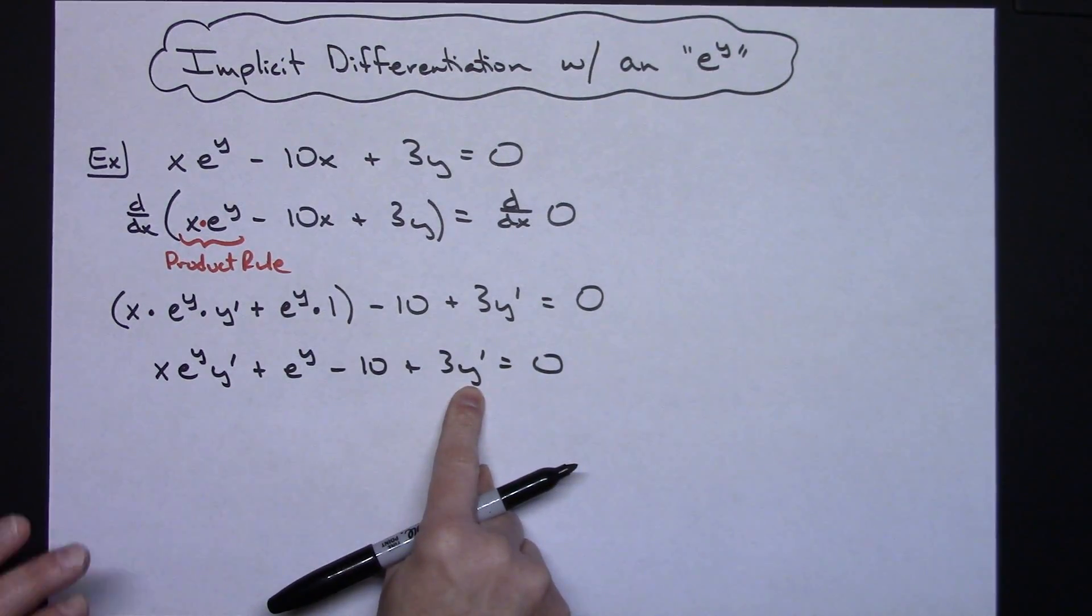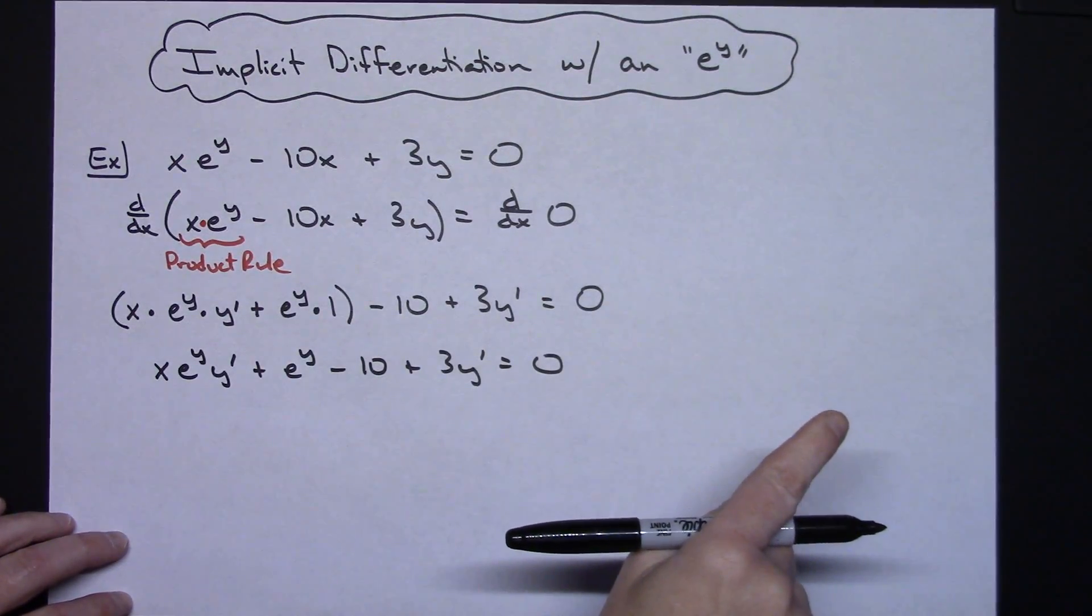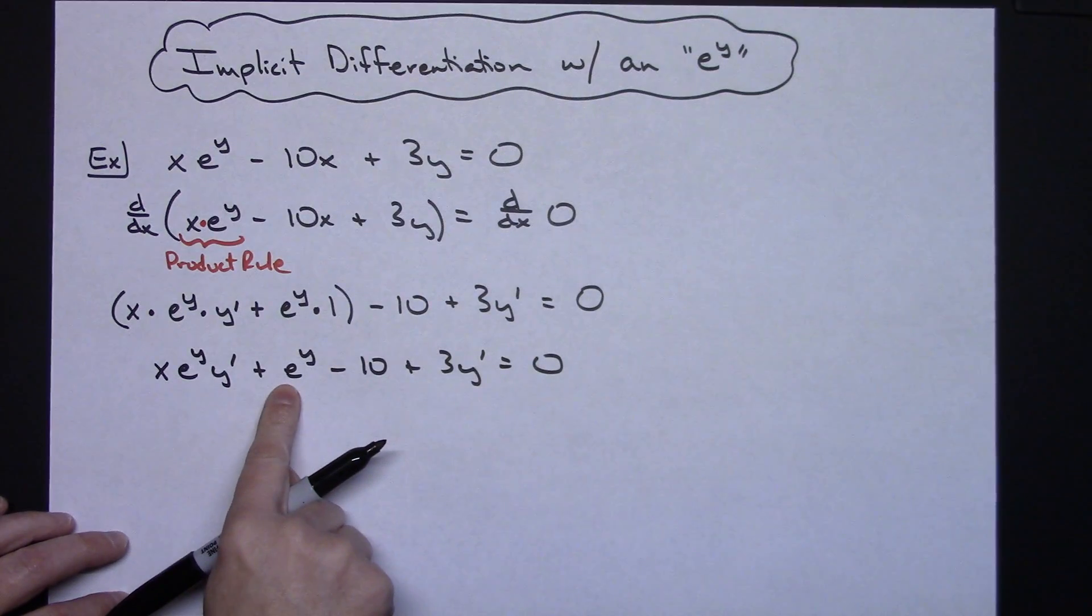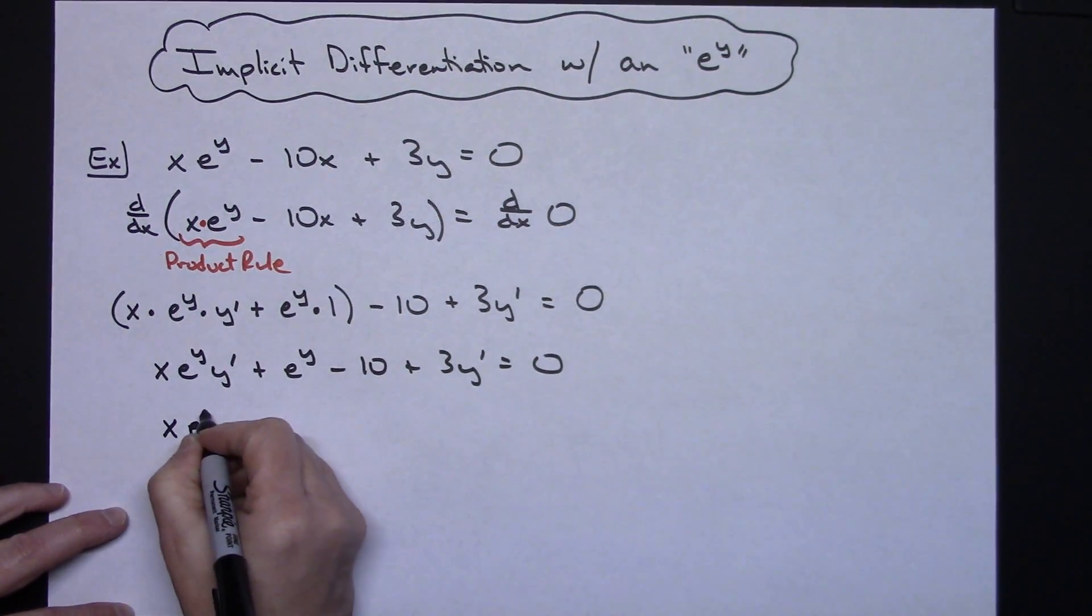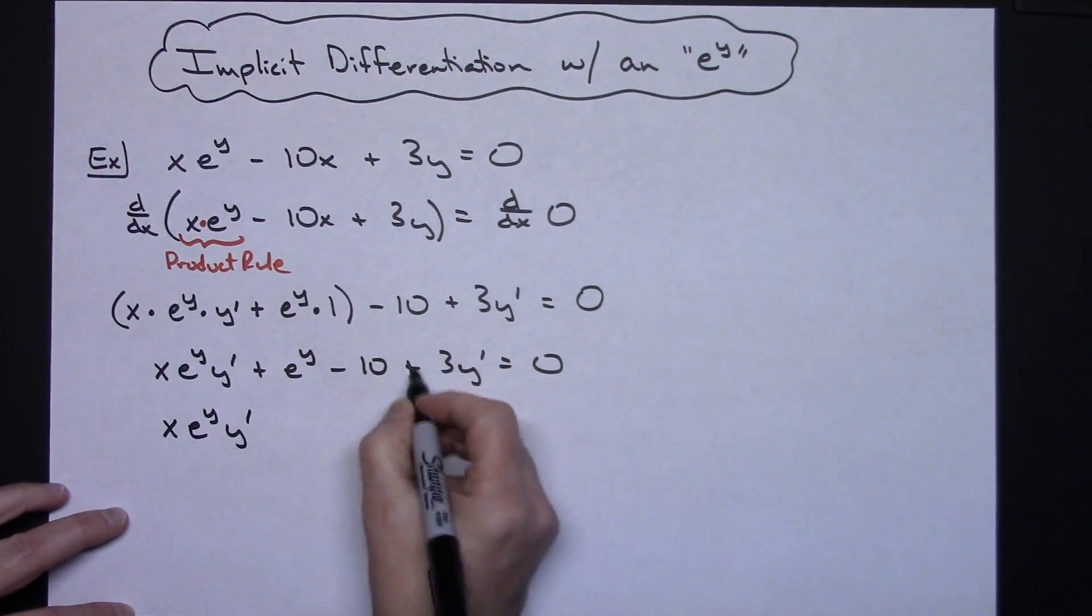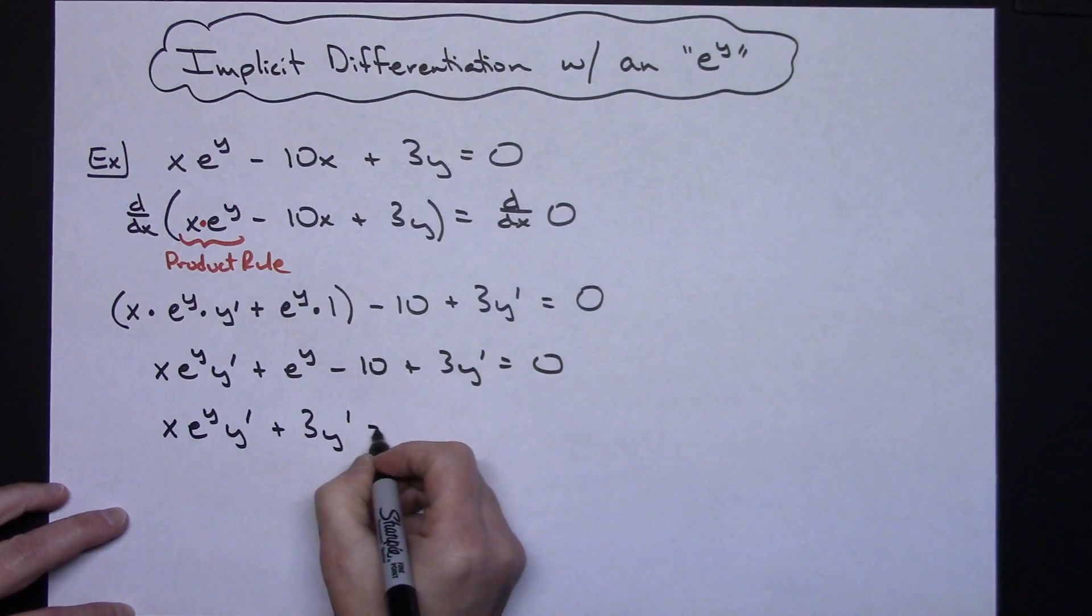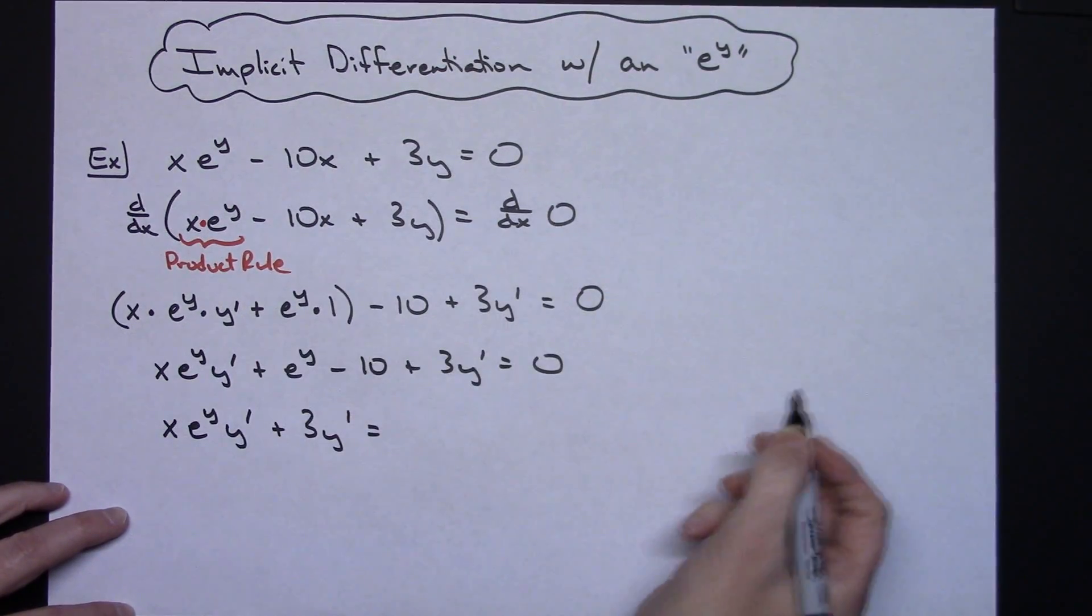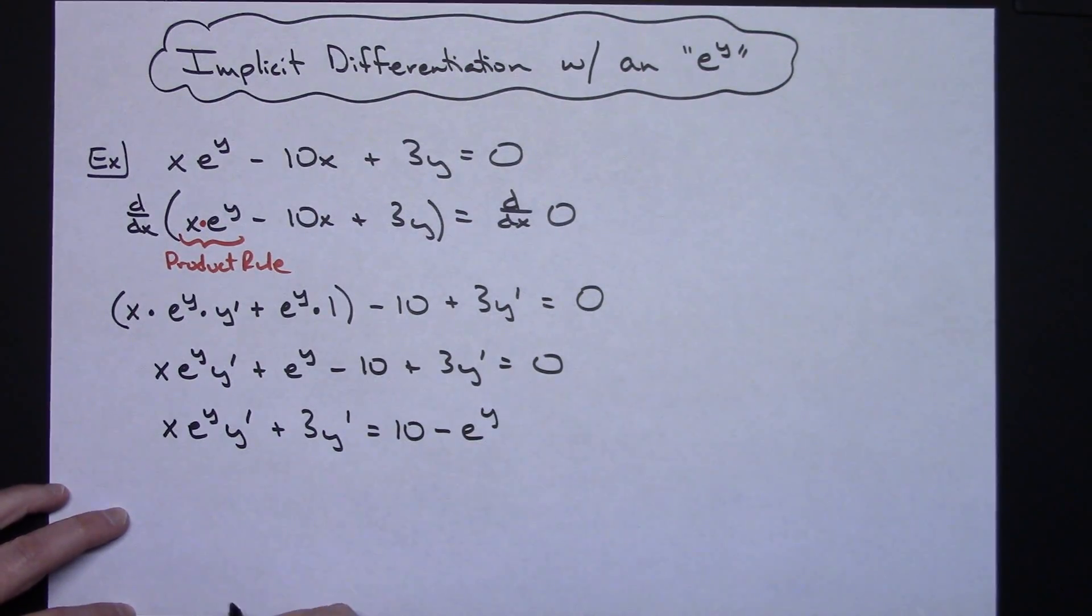Terms with y prime are going to stay on the left. All other terms are going to go to the right-hand side of the equation. When they go to the right-hand side, they change their sign. So on this side, I'll have x e to the y, y prime, the other y prime term, plus 3y prime, equals moving these two terms to the other side, I'm going to have a 10 minus an e raised to the y.